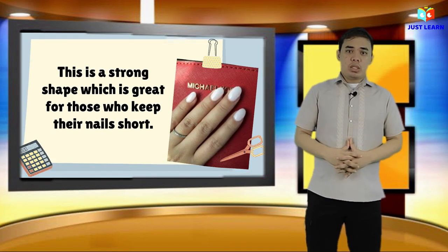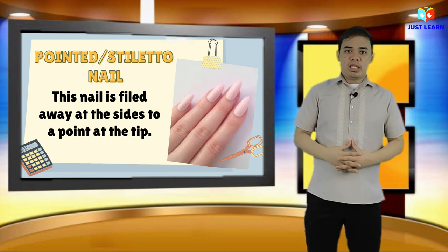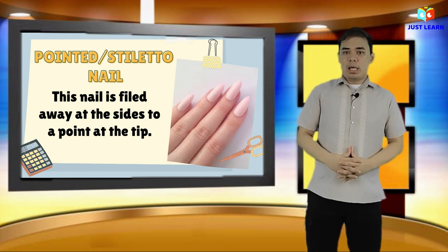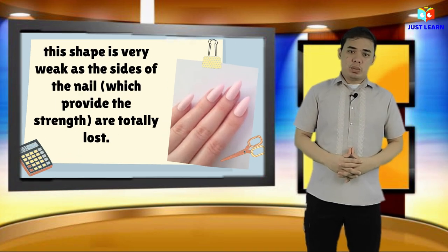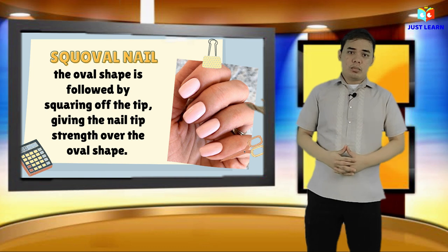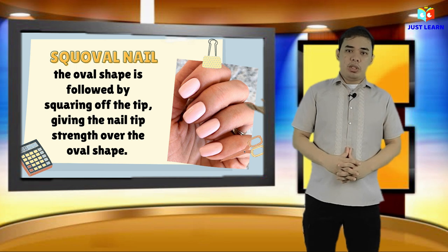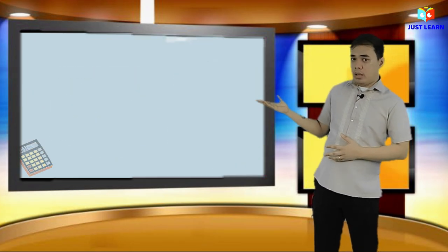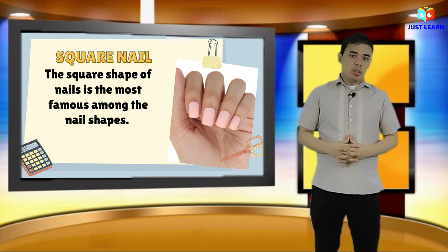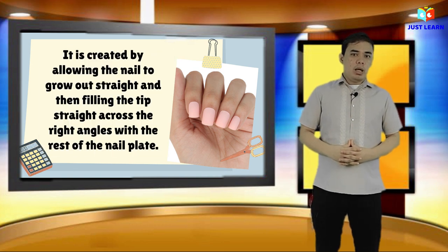Third is the stiletto or pointed nail — this nail is filed away at the sides to a point at the tip. This is very weak, as the sides of the nail which provide strength are totally lost. Fourth, we have the squoval — as the squoval shape follows the squaring of the tip, this gives the nail tip strength over the oval shape. And lastly, is the square nail — this is the squarest shape of nails and the most popular among nail shapes. It is created by allowing the nail to grow out straight and then filing the tip straight across at a right angle with the rest of the nail.